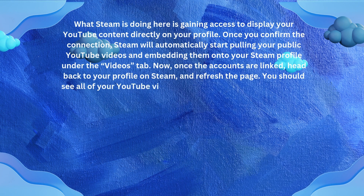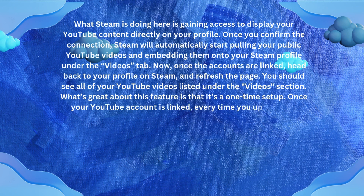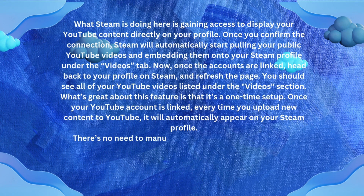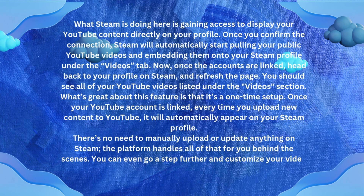Now once the accounts are linked, head back to your profile on Steam and refresh the page. You should see all of your YouTube videos listed under the Videos section. What is great about this feature is that it is a one-time setup — once your YouTube account is linked, every time you upload new content to YouTube it will automatically appear on your Steam profile. There is no need to manually upload or update anything on Steam; the platform handles all of that for you behind the scenes.